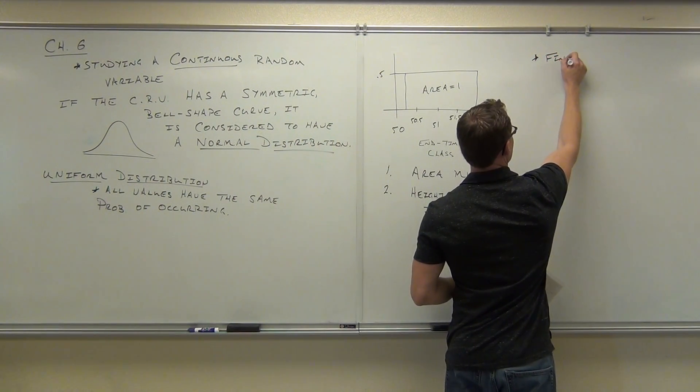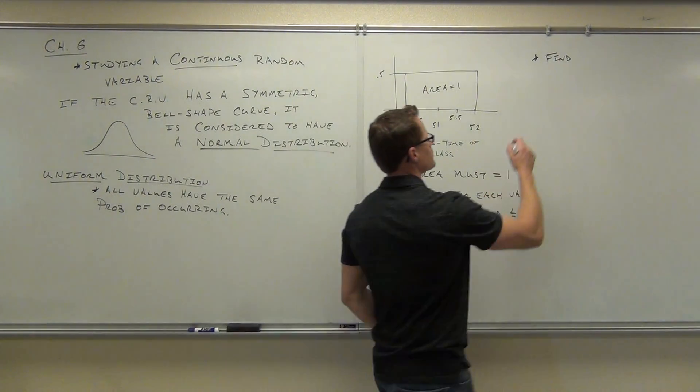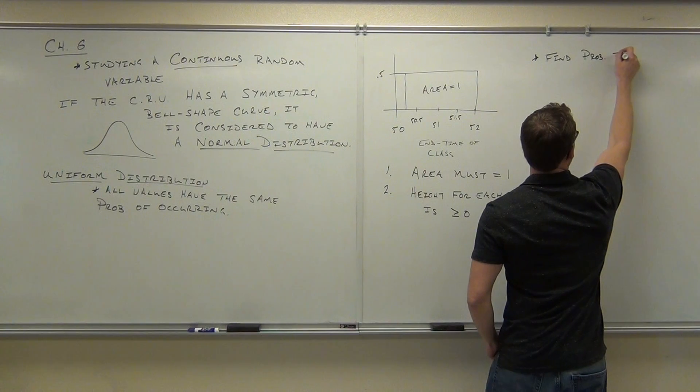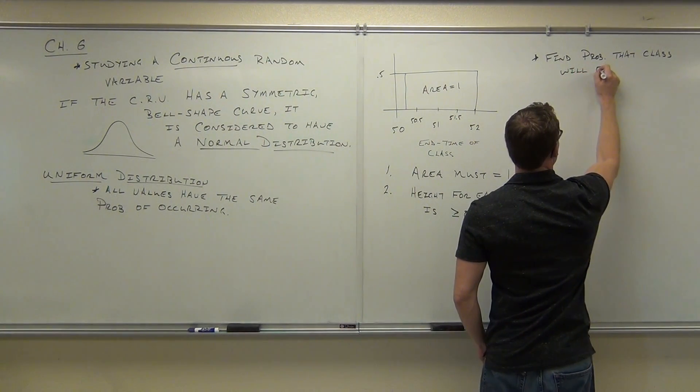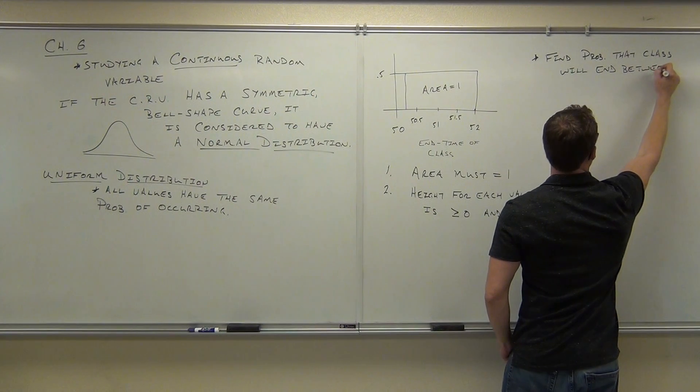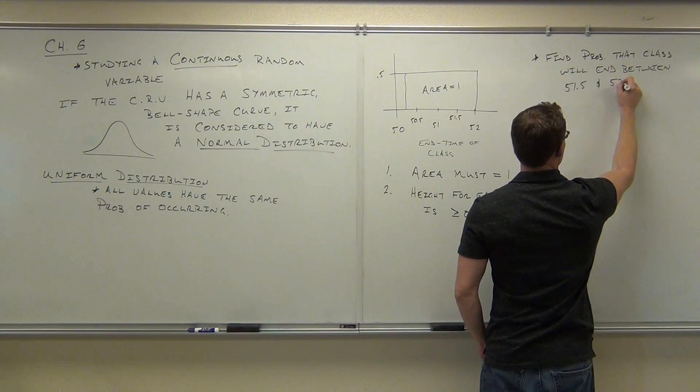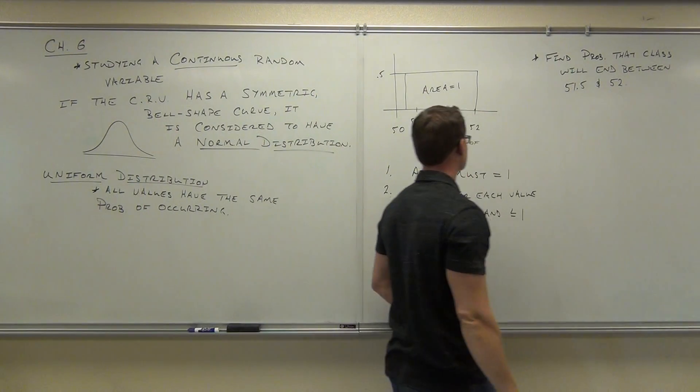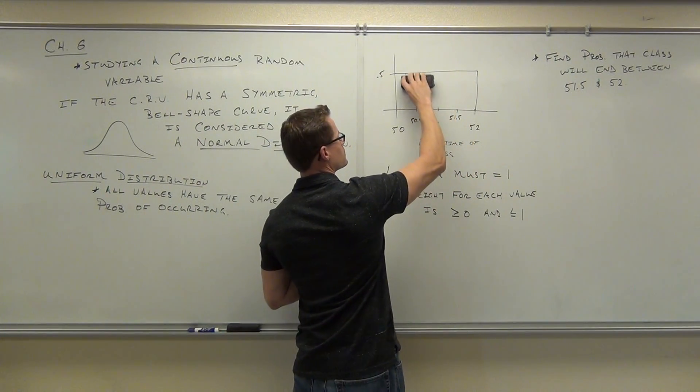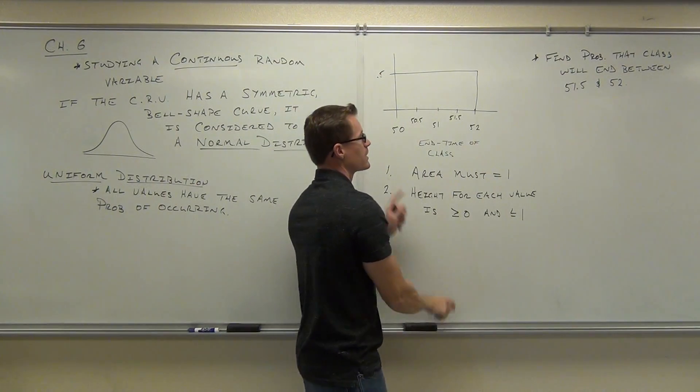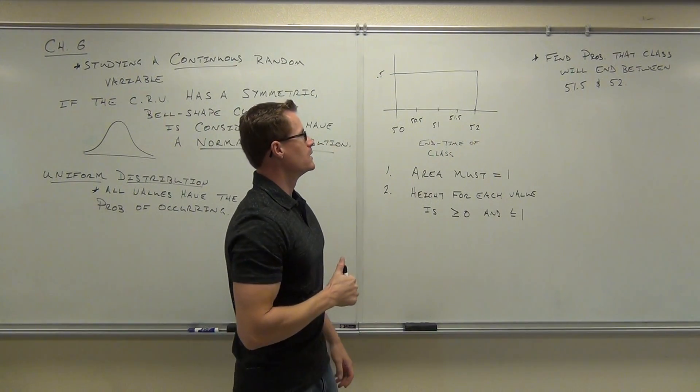Find the probability that our class will end between, let's do 51.5 minutes and 52 minutes. Hey, let's go over this one more time. First, I'm going to erase the area equals 1 because, well, that's true. The area does equal 1. We made it so that it did. We put that certain level there so that our area is equal to 1. Are you all with me on that one? Feel okay with that? All right.